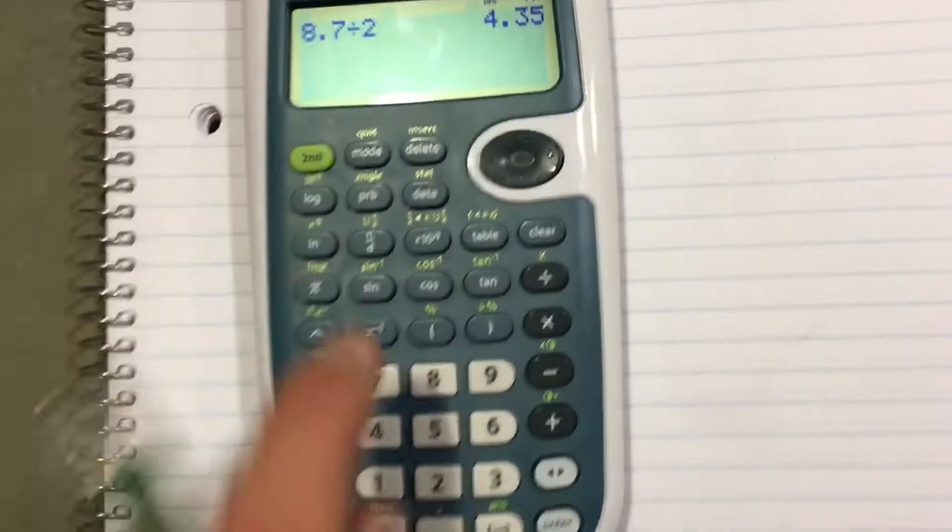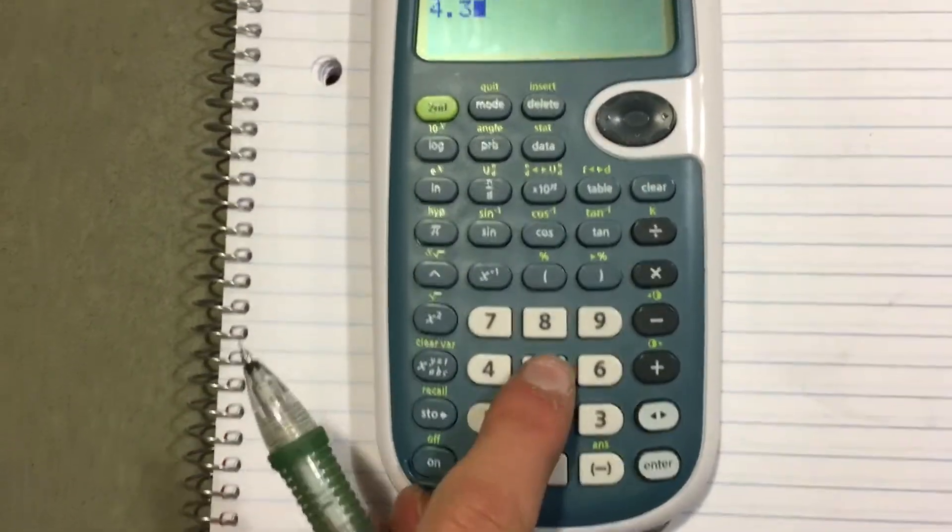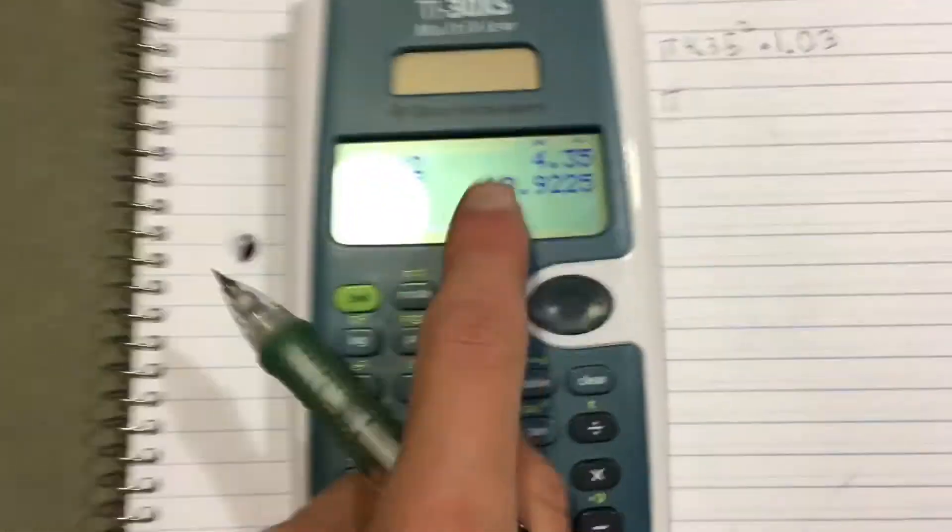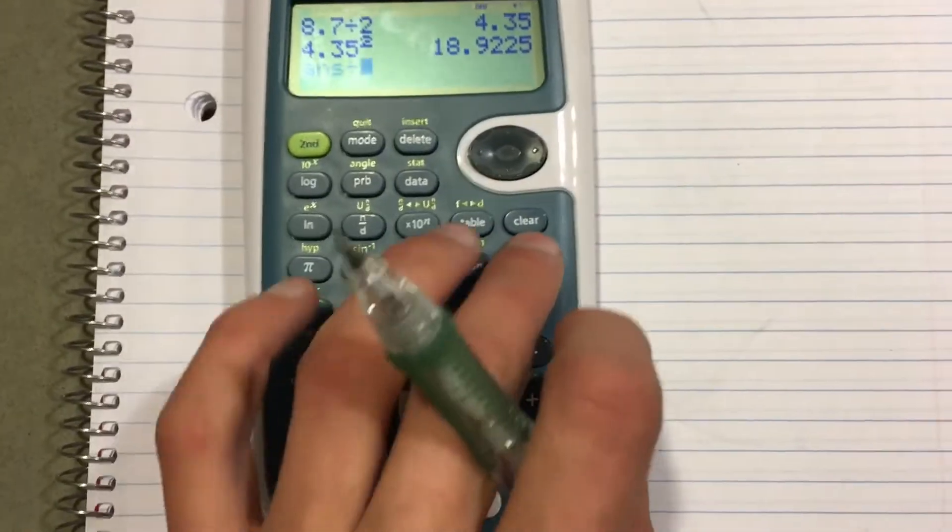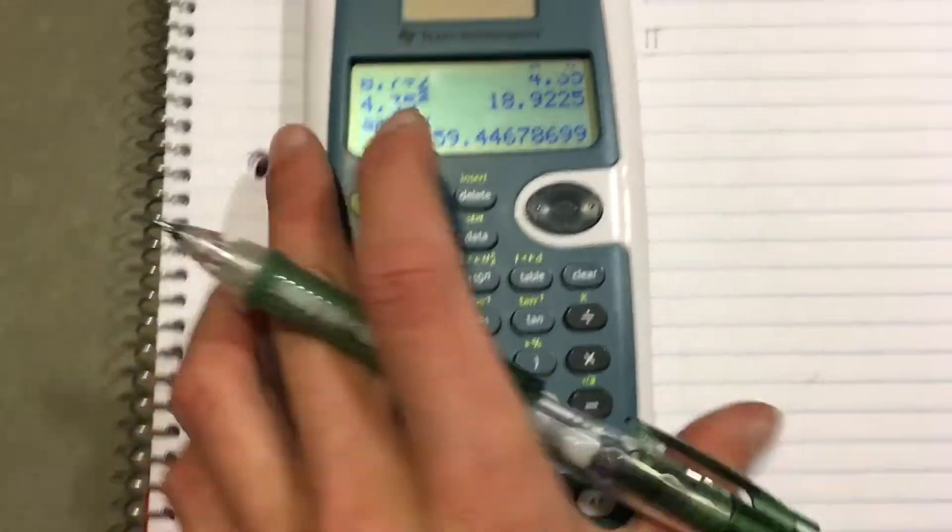So you want to square 4.35, boom, you get 18.9225. You're going to multiply that by pi and you get... actually I wrote down pi on this one.